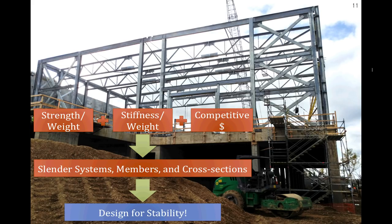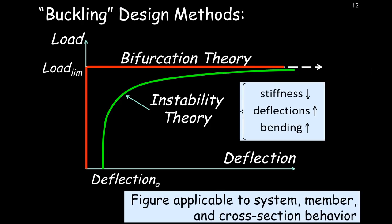As a practicing engineer, you need to get your head around stability in order to design nice, efficient structures. When it comes to stability, I want to step back and look at two buckling design methods. This figure applies equally whether you're considering a system, a member, or a cross-section. We're not just limited to a column example — it could be a three-story building as well. On the horizontal axis, I'm plotting deflection, and on the vertical axis, compressive load.